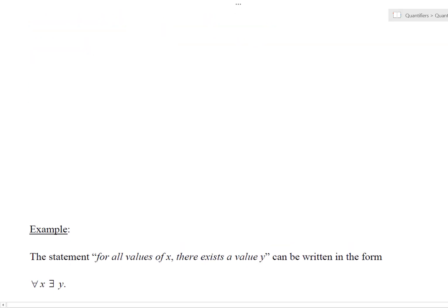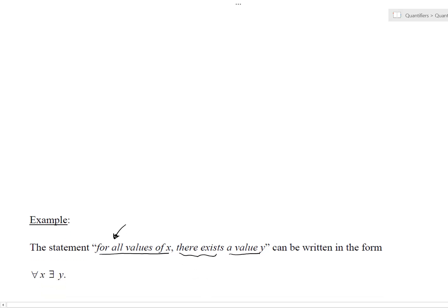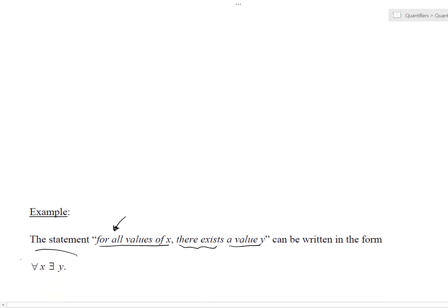Here's an example. Consider the statement, for all values of X. Let's look at the word, this phrase here, for all. For all values of X, there exists a value of Y. How can we write that using the quantifiers that we just talked about?